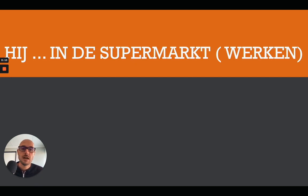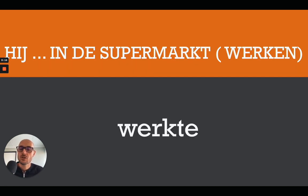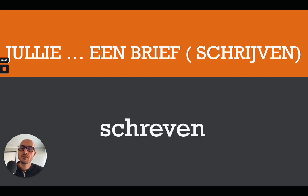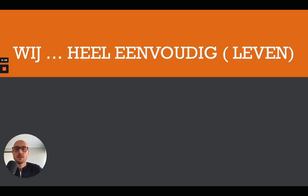The correct answer for vinden is jullie vonden de schat — an irregular simple past. Next: hij [blank] in de supermarkt, and the verb is werken. The answer is hij werkte in de supermarkt — completely regular. The base ends in k, which is part of 't kofschip, so in the singular we add -te. Next: jullie [blank] een brief, and the verb is schrijven — to write. The answer is jullie schreven een brief.